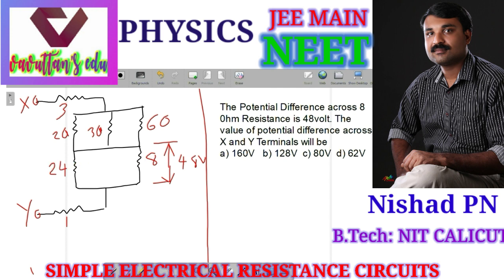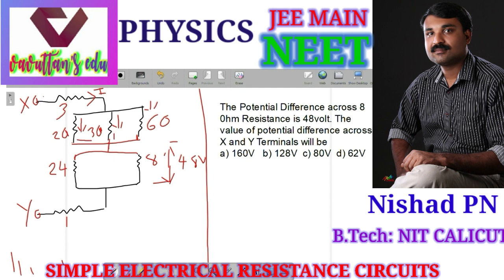So the circuit is redrawn. The current is leaving from terminal X; that current is I. The current splits at a node: one branch is 30 ohm, one is 60 ohm. This current is I1.